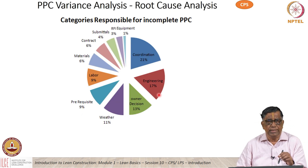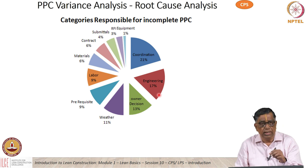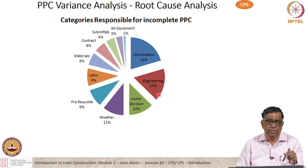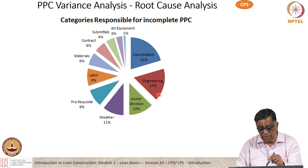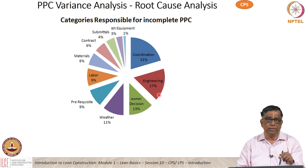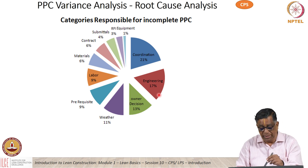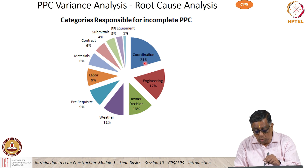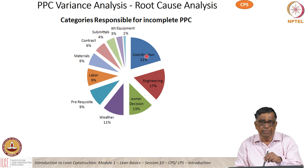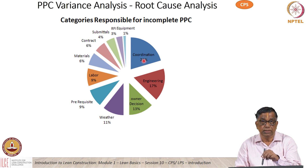Another important lean tool is root cause analysis. At the end of every day, the planning manager asks the front-line people why they haven't been able to complete 100% PPC. Depending on how many times a reason occurs again and again, we draw a pie chart — coordination problem, engineering, owner decision, and so on. We immediately understand what the main culprit is, and then we need to tackle it again and again.